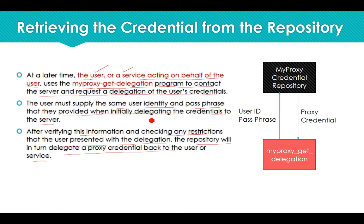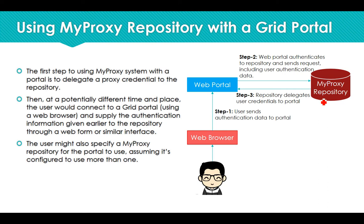Let us now see how the entire execution process works — where the portal is, where the user is, and how things are executed. In the diagram, the MyProxy repository stores your user ID and passphrase. You are the user who uses a web browser to access grid services. The web browser contacts the web portal, and the portal acts on your behalf, accessing your credentials from the MyProxy repository.